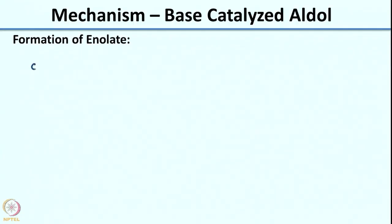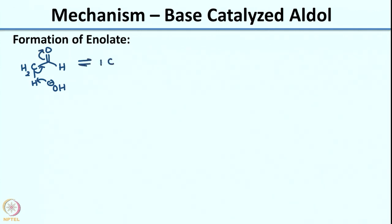Hopefully by now you have some basic mechanism for the aldol reaction. I will walk you through writing the mechanism for the aldol reaction in the basic medium. We are looking at the aldol reaction of acetaldehyde. This hydrogen is acidic, so in the presence of a base, the base would abstract a proton and generate an enolate — this is the first step. Here your electron source is OH⁻ and the acidic proton is your sink.